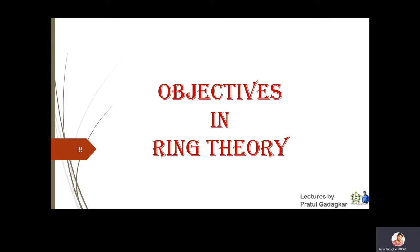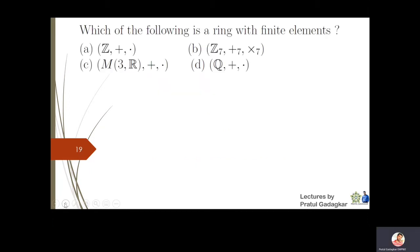We will start with some objectives in ring theory — these are elementary problems of the first section. Which of the following is a ring with finite elements? We know that Z has infinite elements. Z7 has elements from 0-bar up to 6-bar.